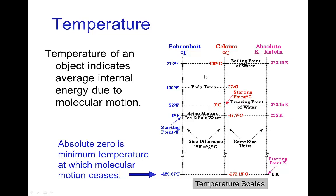The Fahrenheit and Celsius scales have both positive and negative temperatures. The Kelvin scale is calibrated so that it has all positive temperatures, with zero being the coldest possible temperature. This is called absolute zero — the temperature at which all molecular motion ceases.